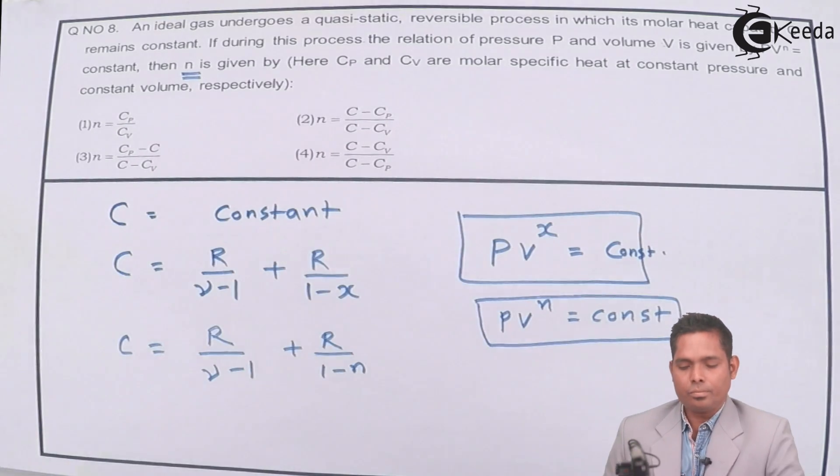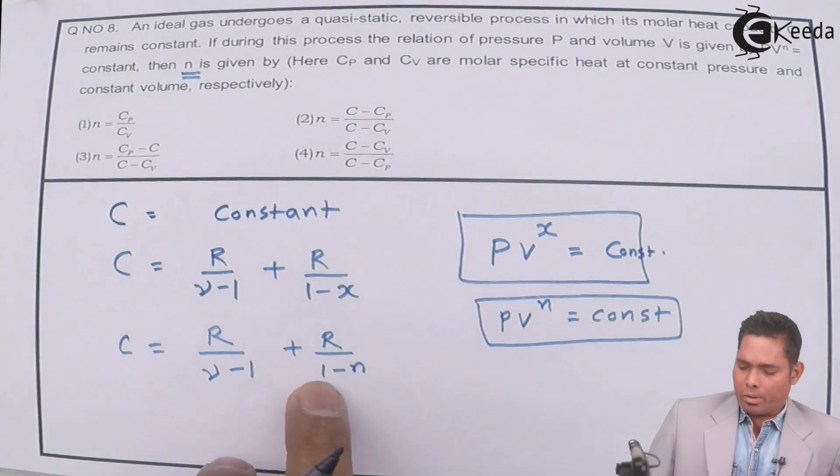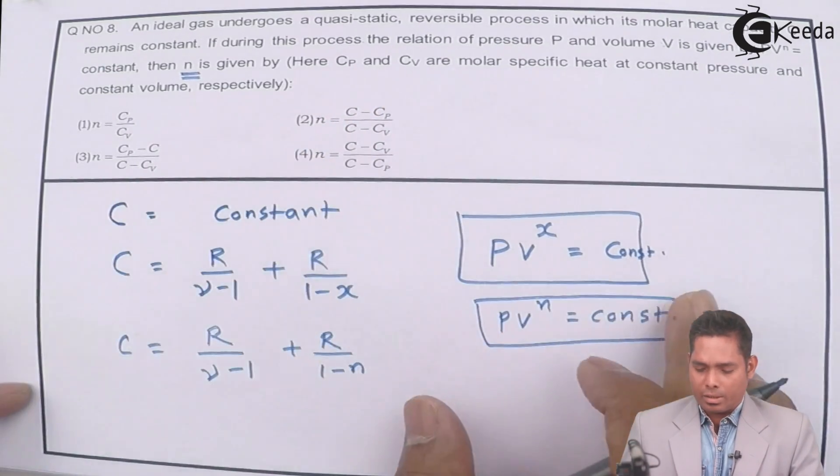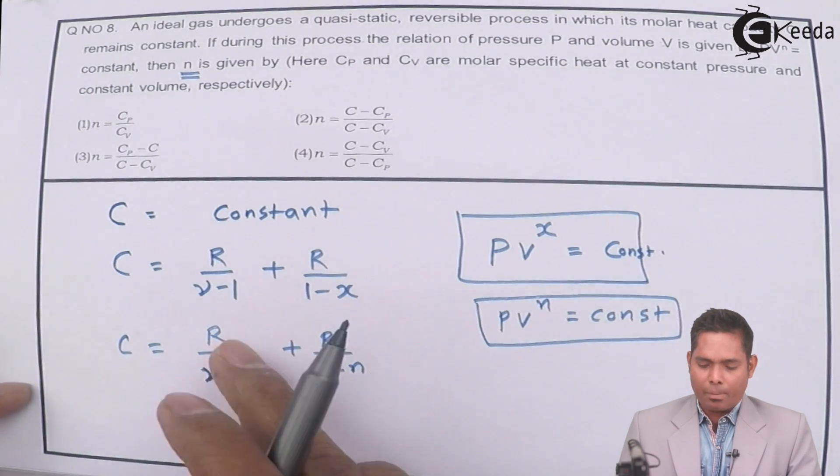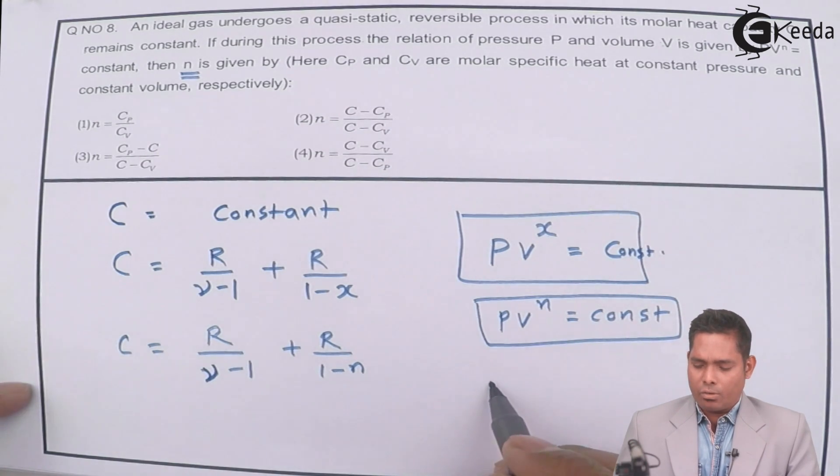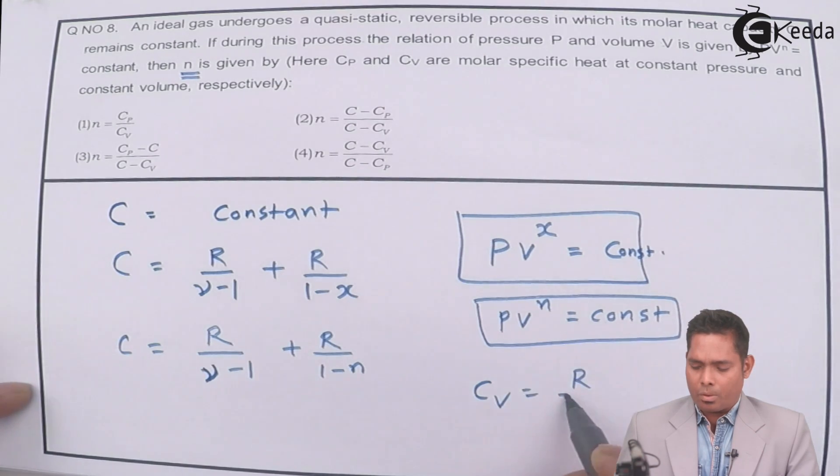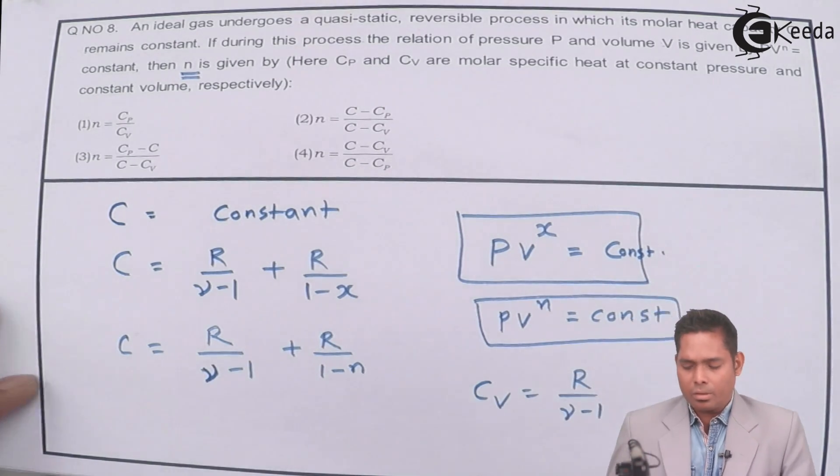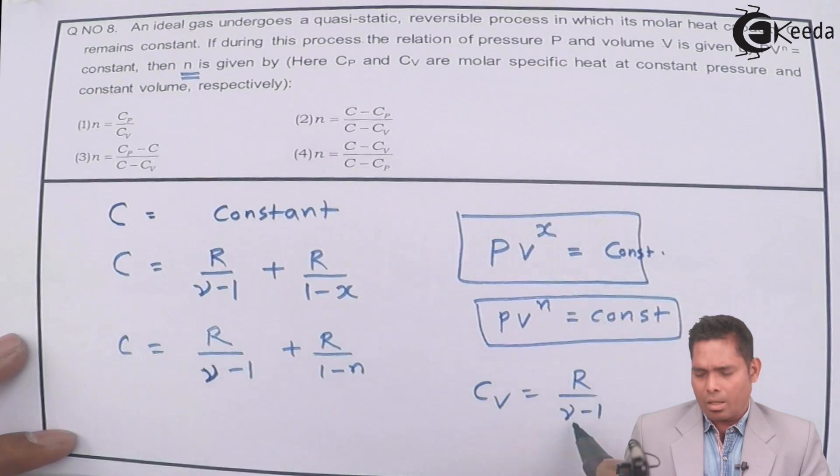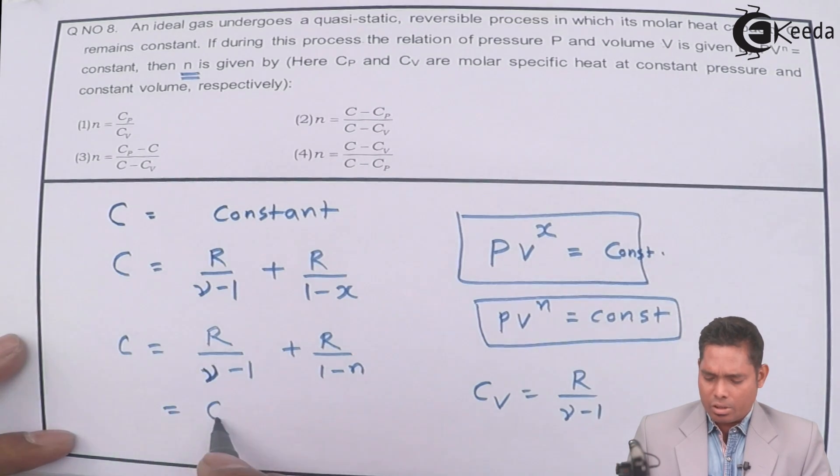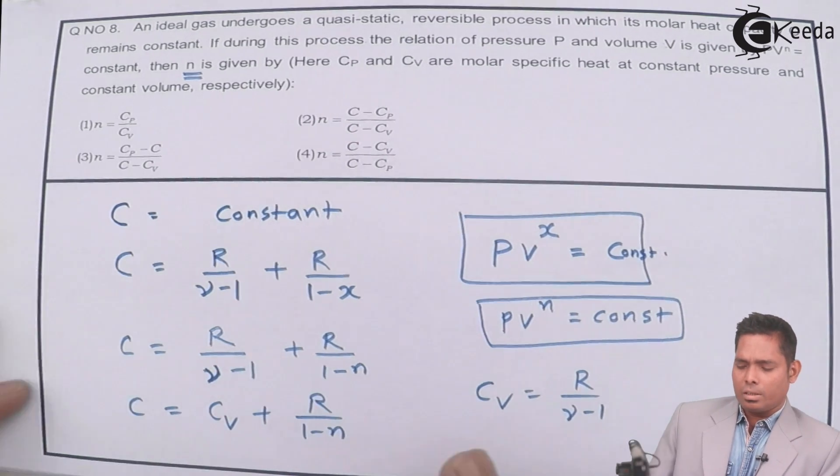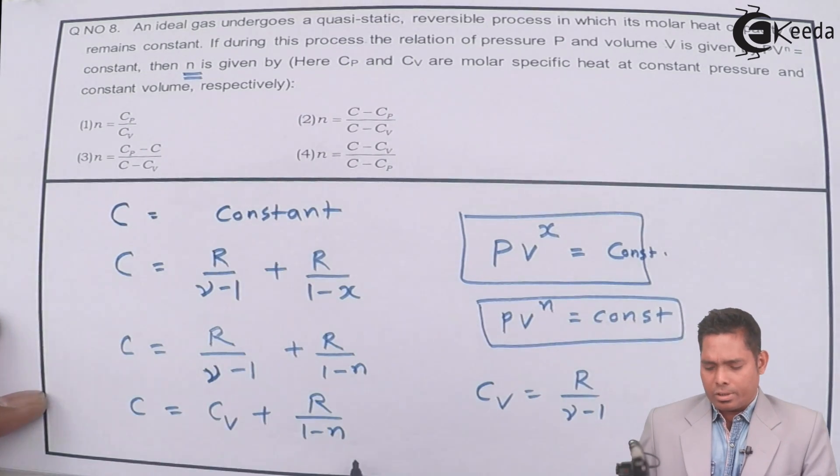To find N, you have to solve this. And that N should be in the form of C, Cp, Cv and nothing else. So this gamma has to be replaced. The gamma is not there. If I arrange this, I have to remove this gamma. But we know that Cv is R upon gamma minus 1. This is a molar specific heat at constant volume, which is R upon gamma minus 1. So right here, this is Cv plus R upon 1 minus N. This is C. So this is the answer. Basically, you have to rearrange this to get the answer.